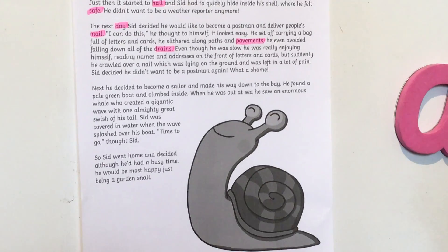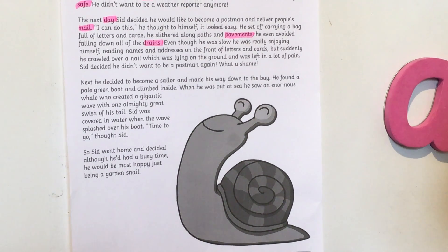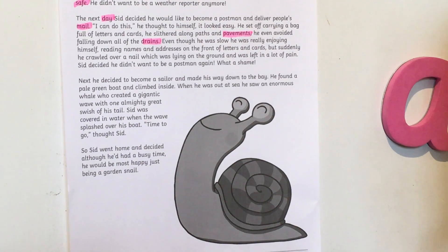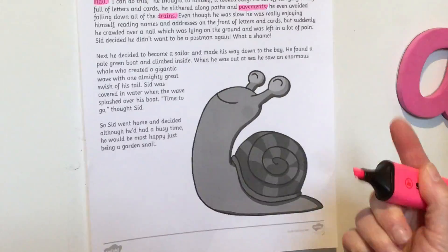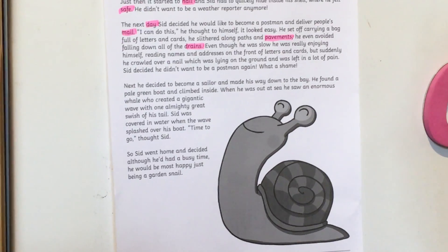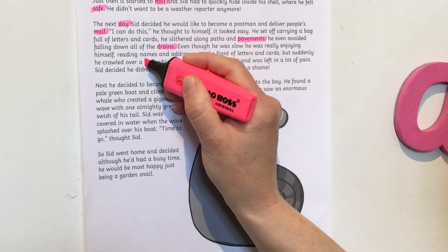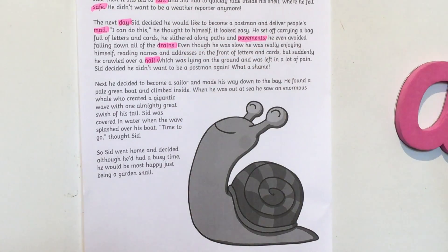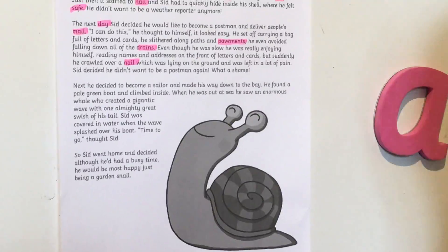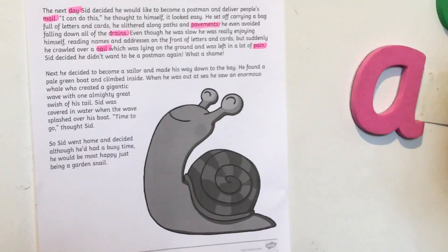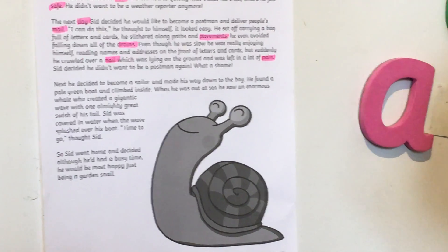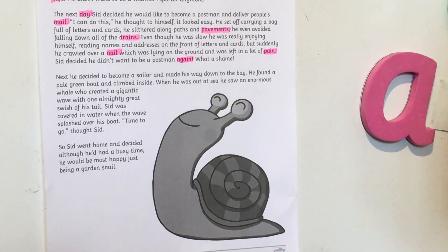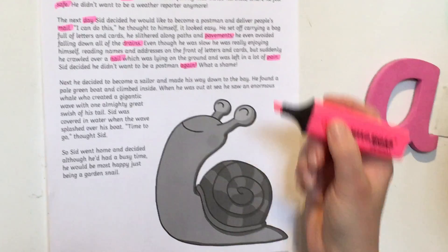But suddenly he crawled over a nail which was lying on the ground — no, not 'ground.' Listen again: he crawled over a nail — yes, 'nail,' well done. And was left in a lot of pain — 'pain,' yes. Sid decided he didn't want to be a postman again — 'again.' What a shame — 'shame.'